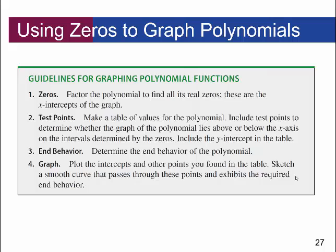Here are the guidelines for graphing polynomial functions. First, find the zeros by factoring the polynomial to find all real zeros — these are the x-intercepts. Next, find test points: make a table of values to determine whether the graph lies above or below the x-axis on the intervals determined by the zeros, and include the y-intercept. Then find the end behavior. Finally, use all this information to plot the intercepts and other points, and sketch a smooth curve that passes through these points and exhibits the required end behavior.